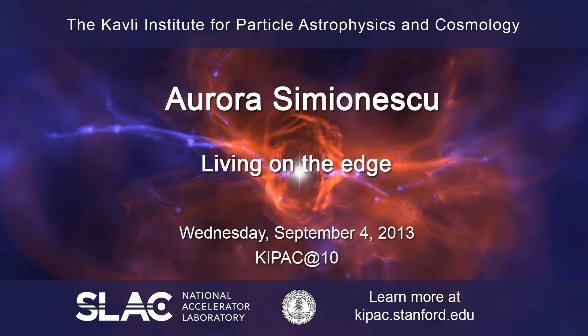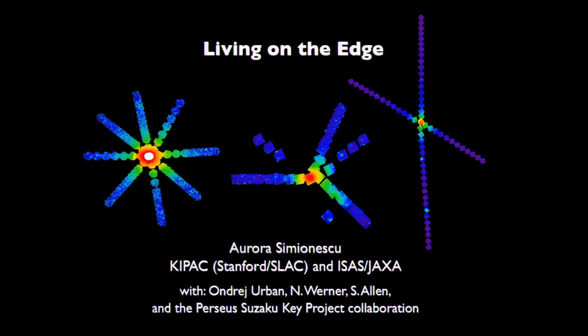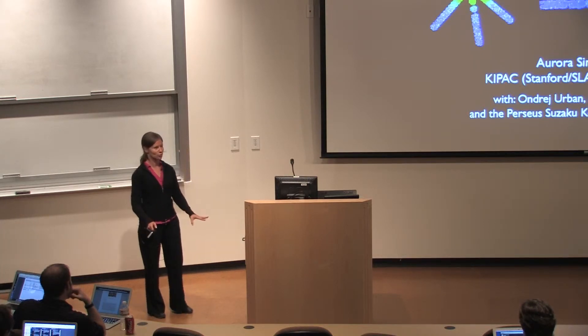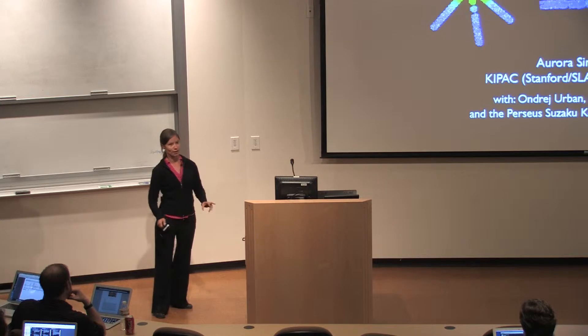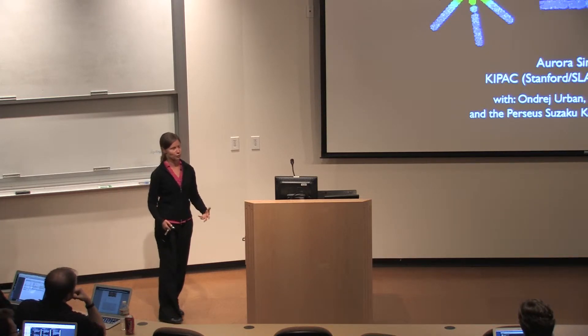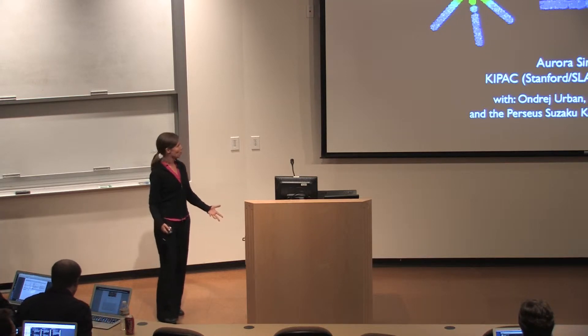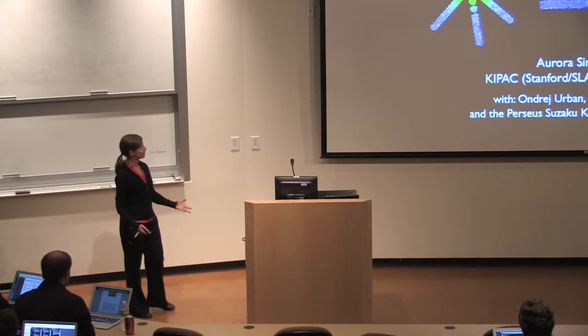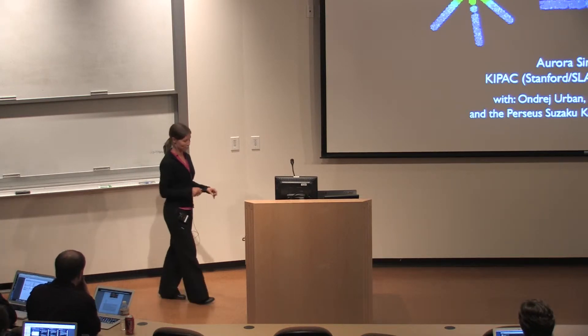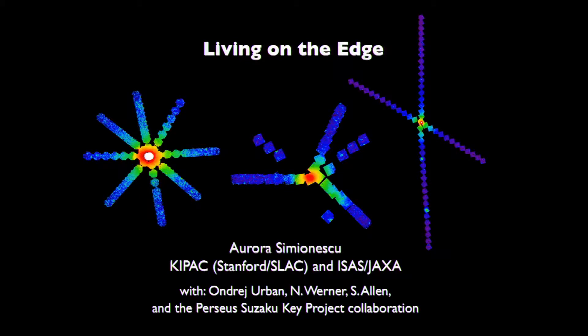All right, hi everyone. Thanks for sticking around. The name of the session officially is How Did We Get Here, in parentheses Galaxy Evolution. I'll confess from the beginning that I'm not going to talk about galaxy evolution at all, but I will try to talk about how we got here in the sense of large-scale structure formation and how the largest things in the universe grow. These are clusters of galaxies, so I'm going to talk about the properties near the edges of clusters of galaxies.